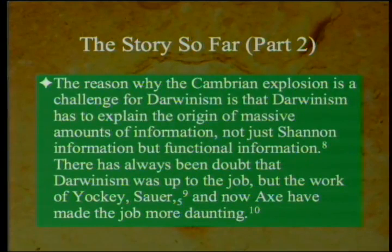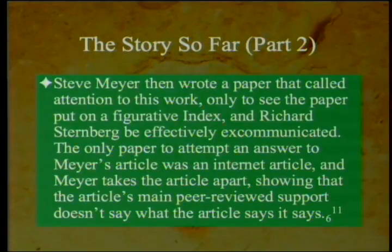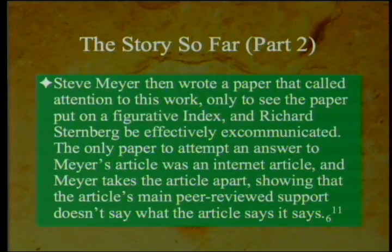In Part 2, the reason the Cambrian Explosion is a challenge for Darwinists is that Darwinism has to explain the origin of massive amounts of information — not just Shannon information or complexity pure and simple, but complexity that works: functional information. There is always doubt that Darwinism is up to the job, but the work of Yaqui Sauer and now Axe have made the job much more daunting. Steve Meyer then wrote a paper calling attention to this work, only to see it effectively put on a figurative index and Richard Sternberg excommunicated. The only paper attempting an answer to Meyer's article was an internet article, and Meyer takes that article apart, showing its main peer-reviewed support doesn't say what the article claims it says.